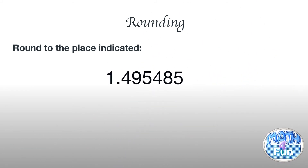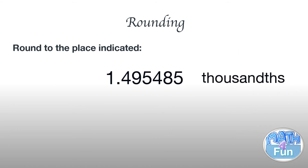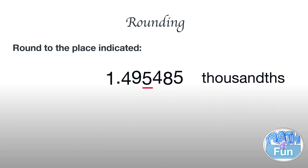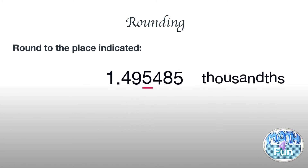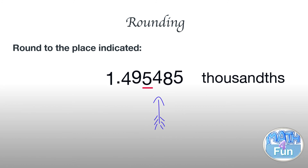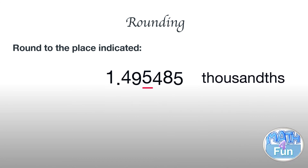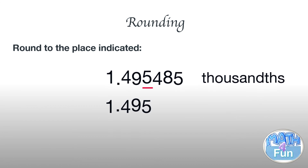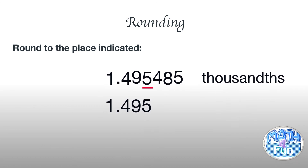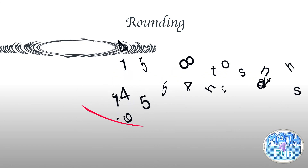Here we have 1.495485 and we need to round to the nearest thousandth. The thousandths place is the third decimal digit — tenths, hundredths, thousandths. The digit to the right is 4, which is not 5 or more, so we change 4, 8, and 5 to zeros and keep the others. The answer is 1.495000, or simply 1.495.